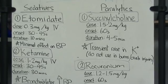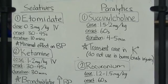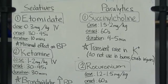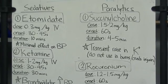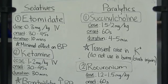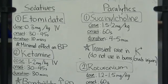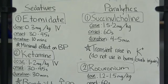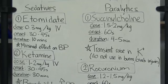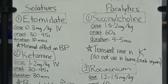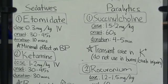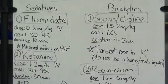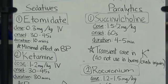The first sedative drug we're going to talk about is Etomidate. Etomidate is an ultra-short-acting sedative which makes it favorable in the ED environment. Etomidate is dosed at 0.3 milligrams per kilogram IV push, has an onset of 30 to 45 seconds, and has a duration of 10 minutes.